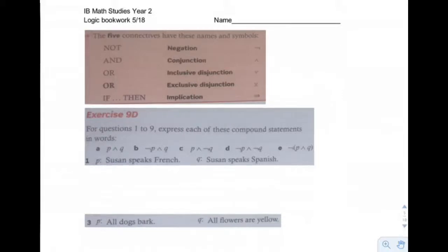Page 5. The five connectives have these names and symbols. So we've gone through this in the investigation, but 'not' looks like that, 'and' looks like that, and kind of looks like the intersect symbol — and it kind of means intersect. 'Or' kind of looks like the union symbol and kind of means union. Exclusive or, which they call exclusive disjunction, is like inclusive disjunction with a line underneath it.